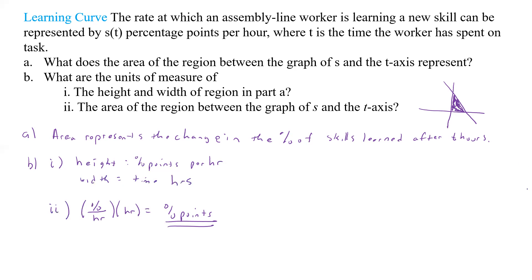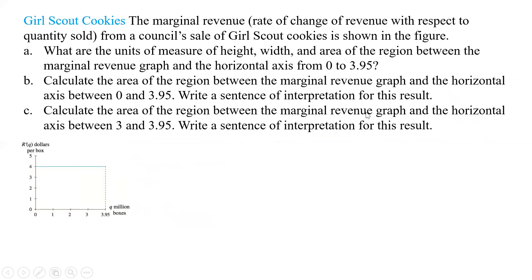So we have to know what our axes are. T equals hours and S of T equals percentage points per hour — that's just based on what we're given. All right, what about the next one? We have Girl Scout cookies. The marginal revenue — the rate of change of revenue with respect to the quantity sold — from a council sale of Girl Scout cookies is shown in the figure.